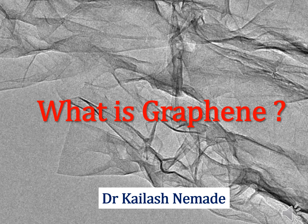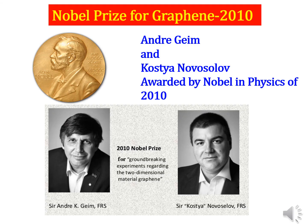Its discovery was so significant that it earned the Nobel Prize in Physics of 2010. A thin flake of ordinary carbon, just one atom thick, lies behind the 2010 Nobel Prize in Physics. Andre Geim and Konstantin Novoselov showed that carbon in such a flat form has exceptional properties originating from the remarkable world of quantum physics. They extracted graphene from a piece of graphite such as is found in ordinary pencils, using regular adhesive tape to obtain a flake of carbon with a thickness of just one atom. This at a time when many believed it was impossible for such thin crystalline materials to be stable.